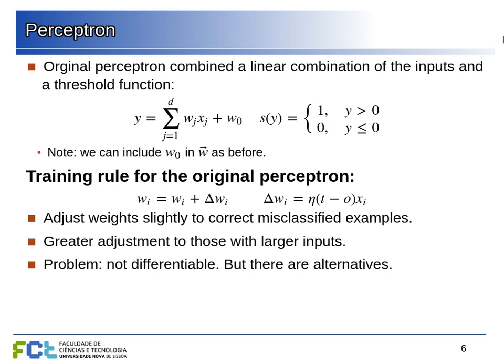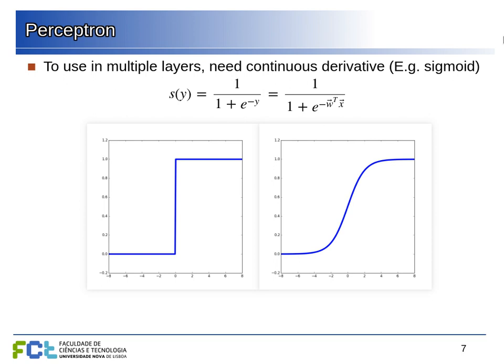One problem is that this only works for a single perceptron. Since this activation function is zero or one, we cannot connect perceptrons in a network and propagate the error, because we don't have derivatives. This was a limitation for putting the original perceptron into networks. We can solve that by using a continuous function instead — like the sigmoid curve we saw in logistic regression. Its derivative is continuous so we can compute the derivative of the error and try to minimize it even with several layers of neurons.